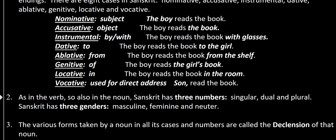Just as with the verb, the noun in Sanskrit also has three numbers: singular, dual, and plural. Sanskrit also has three genders: masculine, feminine, and neuter. These are similar to French, Spanish, Hindi, and Latin, which also have gendered nouns — though French, Spanish, and Hindi do not have neuter, while Sanskrit does.